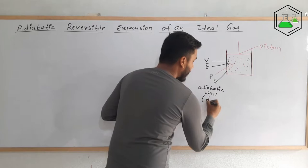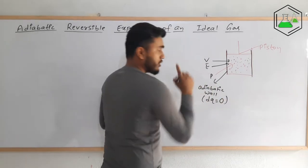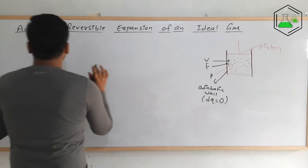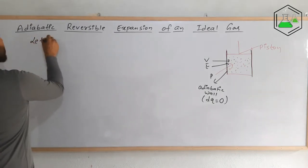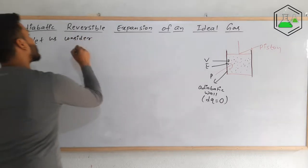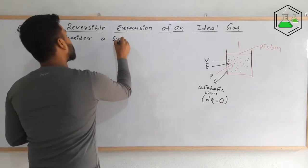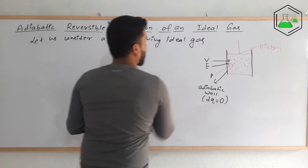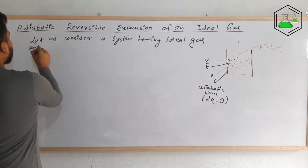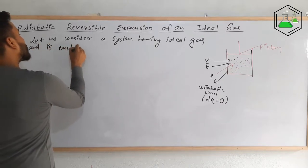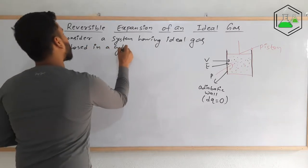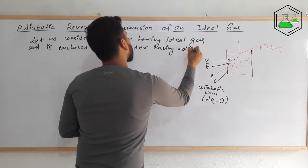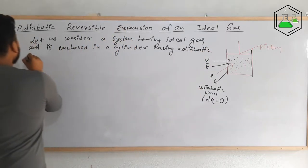Now we are considering the wall to be adiabatic. Adiabatic wall simply means the heat exchanged between the system and surroundings will be zero — that means it won't allow heat to be exchanged between the system and the surrounding. Let us consider a system having ideal gas enclosed in a cylinder having adiabatic wall.